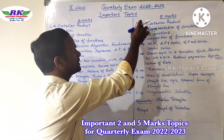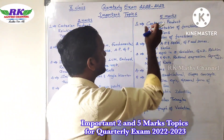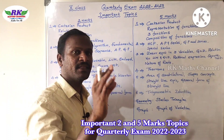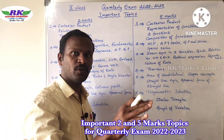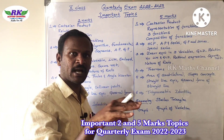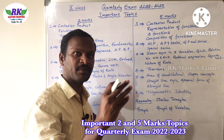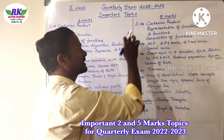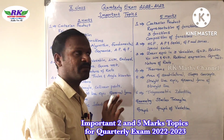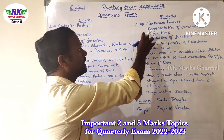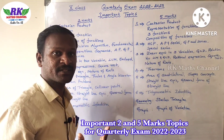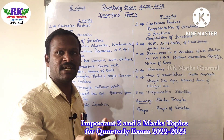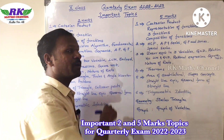For the first unit, 5 marks: Cartesian product — union, intersection, difference — all set operations. Exercise 1.1, problem numbers 5, 6, 7, and example 1.3 are important topics. Next part is functions: representation of functions — how to represent using set of ordered pairs, arrow diagram, table form, and graph. These 4 types of representation are 5 marks important.